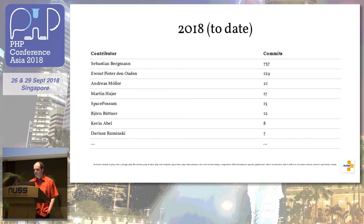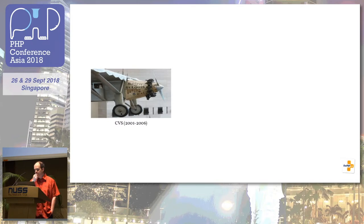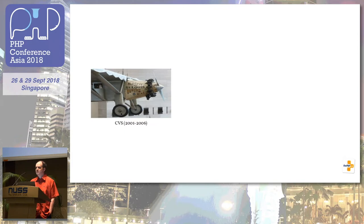To give you a little bit of encouragement: two of the top 10 contributors only started contributing to PHPUnit recently. So if you want to contribute to PHPUnit, it doesn't take that long to become one of the most active developers. One of the main things that happened in the last ten years is that I switched version control systems, because technology evolves. When I started the PHPUnit project, I used CVS — the second version control system I ever used. Back on the Amiga I used RCS, which was a single-user system.